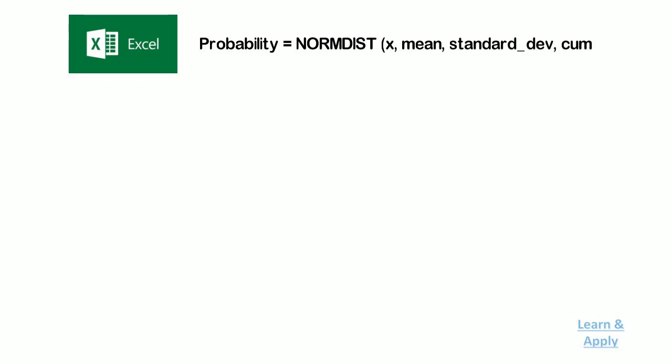We can also use Excel to find out probabilities related to normal distribution random variables. Probability equals NORMDIST(x, mean, standard deviation, cumulative).